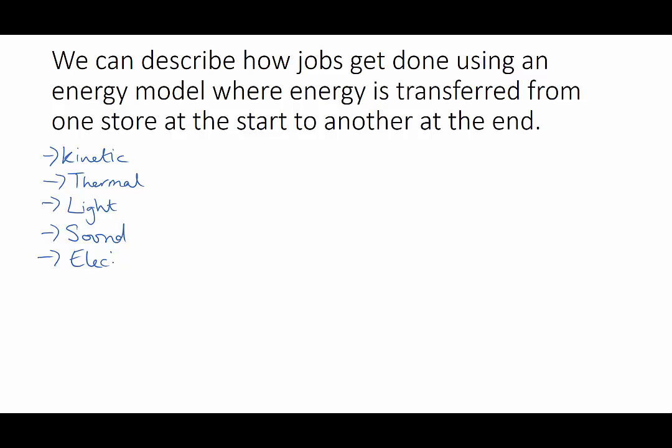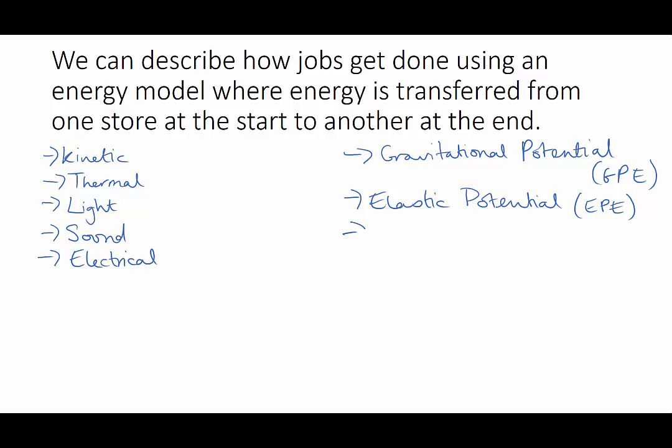All of those are moving energies. Then we have our energy stores which are potential energies. The first is gravitational potential which is the energy things have because they're up high and we sometimes abbreviate that to GPE. The second type of potential energy is elastic potential energy, that's like when you pull back an elastic band or a spring or you compress something, and we abbreviate that to EPE.